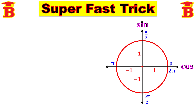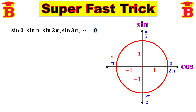Now we can write all the values. Sine values exist only for pi by 2, 3 pi by 2, and so on — meaning for horizontal angles, the sine value is 0. So for horizontal angles 0, pi, 2 pi, 3 pi, 4 pi, etc., sine equals 0. That is: sine 0 = 0, sine pi = 0, sine 2 pi = 0, and so on.